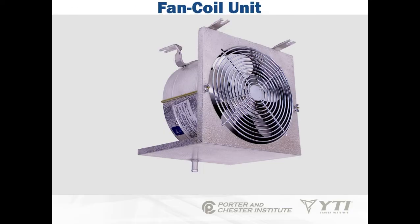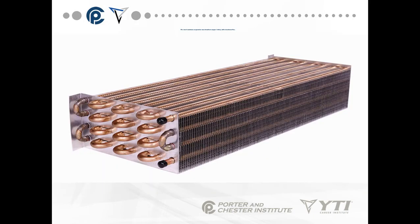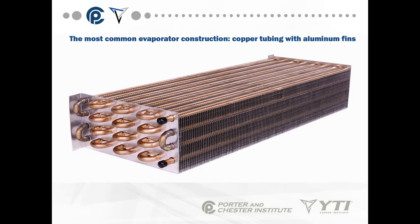The fan coil unit is the most common evaporator construction: copper tubing with aluminum fins. It's almost a block, and the fan blows air across it. The black caps on the tubing are where the connections are made for the suction line and the liquid line.